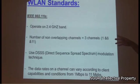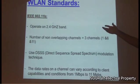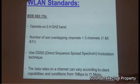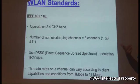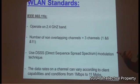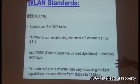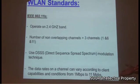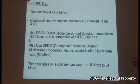IEEE 802.11b is the first standard. It operates on the 2.4 GHz band with three non-overlapping channels (1, 6, and 11). It uses the DSSS (Direct Sequence Spread Spectrum) modulation technique, which spreads data across 22 MHz. Data rates on a channel can vary from 1 Mbps to 11 Mbps, depending on client capabilities and proximity to the access point.